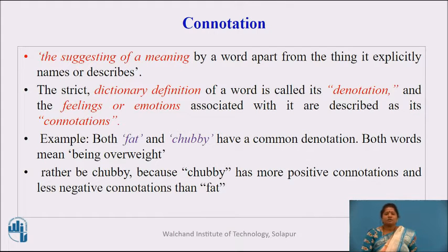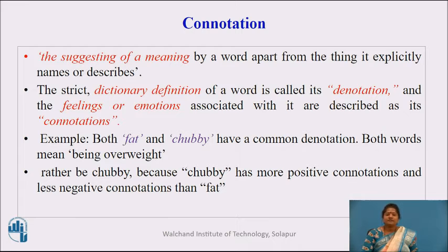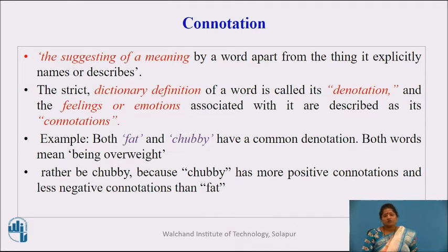Let us learn the concept of connotations. It means the suggesting of a meaning by a word apart from the thing it explicitly names or describes. The strict dictionary definition of a word is called its denotation, and the feelings or emotions associated with the word are described as its connotations. For example, both 'fat' and 'chubby' have a common denotation — both words mean being overweight — but 'chubby' has positive connotations and 'fat' has negative connotations.